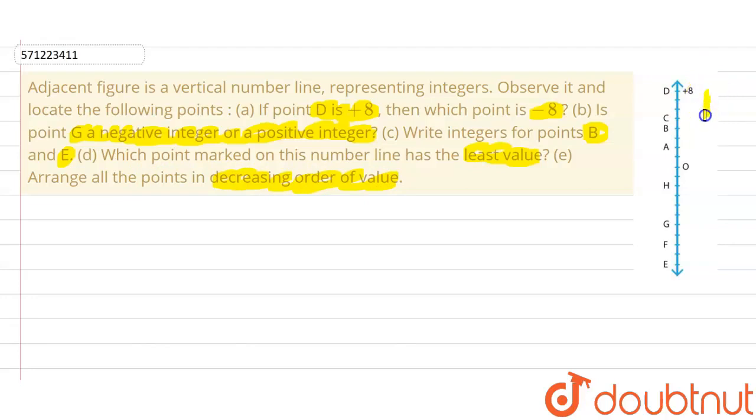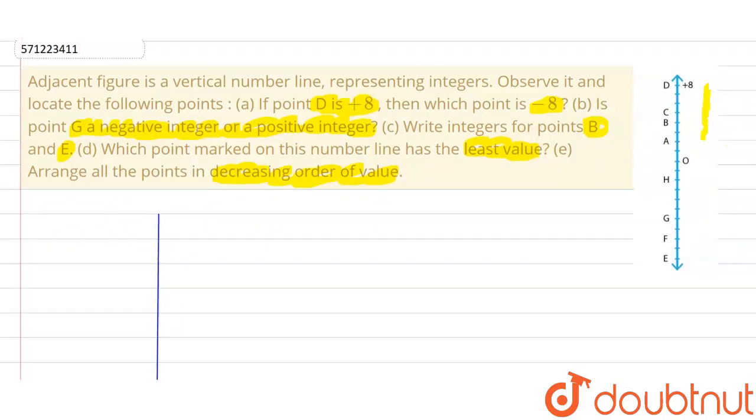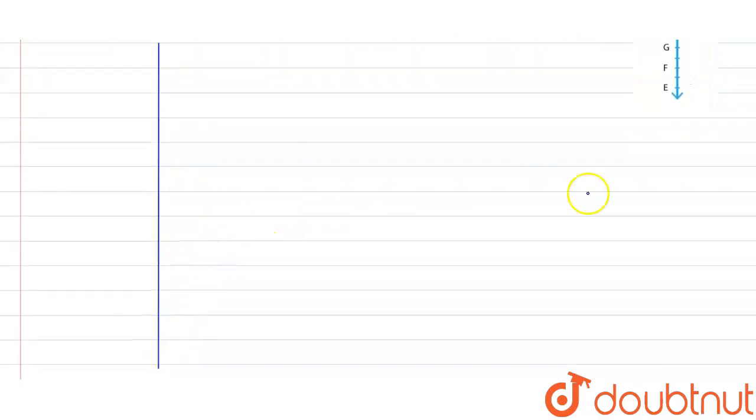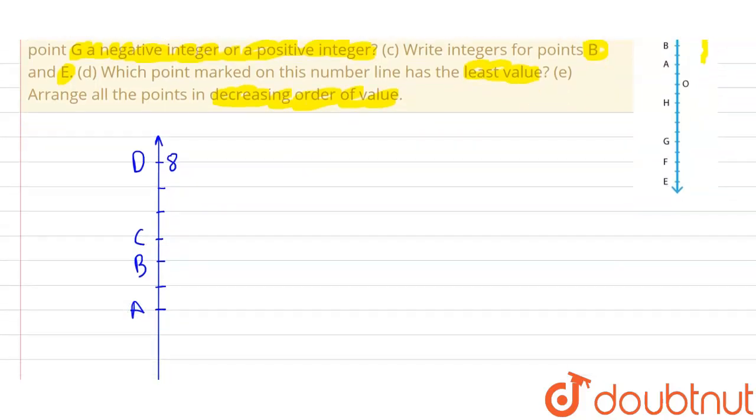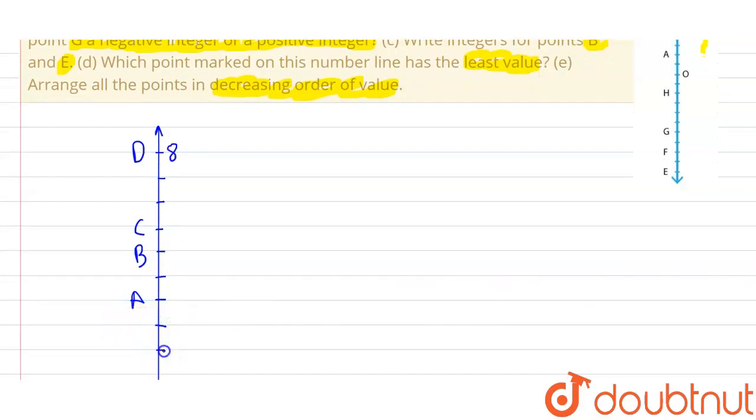And this is where we have the number line. Now, first we draw this vertical number line. Let's draw this vertical number line like this. Now, let's mark points in this. So, let's say this is 8, which is D. This is blank, then this is blank, and this is C. This is B. This is blank. This is A. Then further we have one blank. Then this is 0.